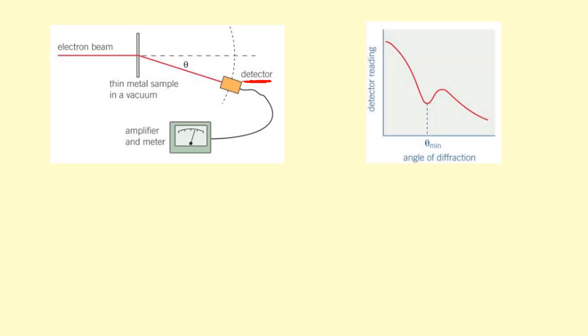When I record the reading on the detector, I find I get a maximum in the center, of course, caused by constructive interference, and then I get a minimum here. When I record the angle at which I get the first minimum...